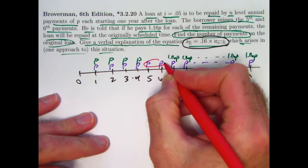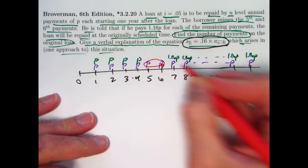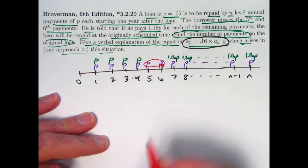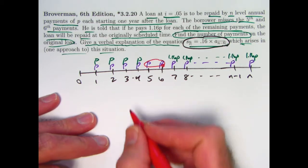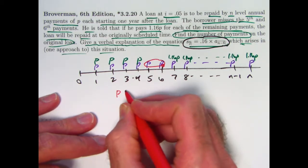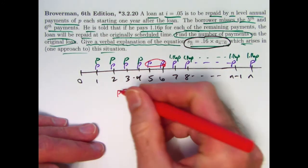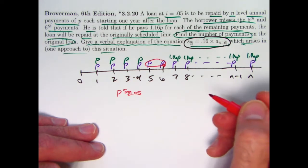Think about these two payments. If we find their future value at time 6, immediately after that second payment, that is going to be the quantity P times s_2. I'll go ahead and put the interest rate here as well. So we have an s_2 in there where we have a P as well.